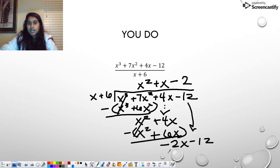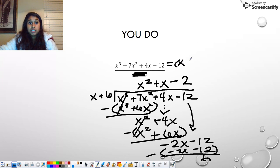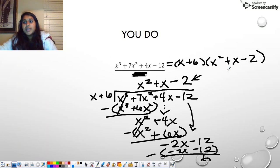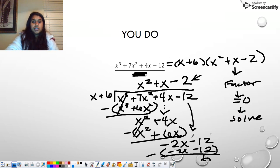And we bring this value down, negative 12. Then we ask ourselves, how many times does x go into negative 2x? It goes in negative 2 times. So this becomes negative 2x and minus 12. Put those negatives, and we end up with the remainder of 0. So I know that this up top is going to be equal to my divisor times my quotient, which is this up top. So x squared plus x minus 2. And then we take the time to factor. Then we set it equal to 0, and then you solve. So make sure you are finishing these solves. Get in that habit.